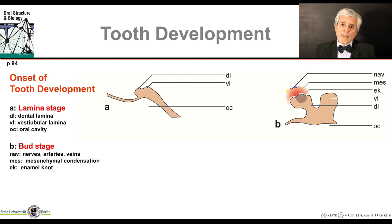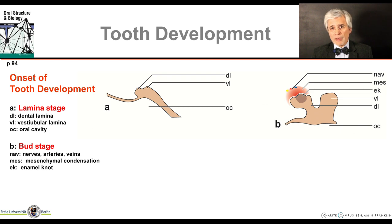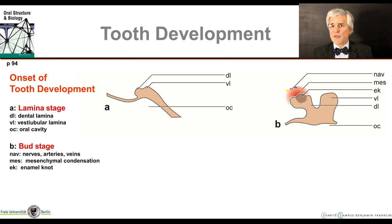Obviously, there are cellular interactions between the epithelium and the mesenchyme. This condensed mesenchyme is the beginning of the formation of the pulp, and you can already see small nerves and vessels in the area — NAV stands for nerves, arteries and veins. At this point it becomes clear that tooth development is a process in which epithelium and mesenchyme work together. In the end, teeth are a product of both tissues: enamel from the epithelium and dentin, pulp, cementum, desmodon, and bone from the mesenchyme.